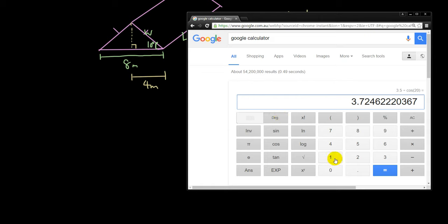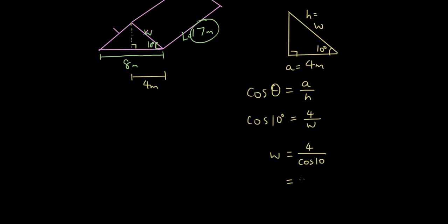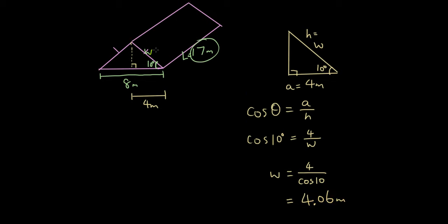Put that into the calculator. Make sure your calculator says degrees. So 4 divided by cosine 10, and the answer is 4.06, so that's 4.06 meters, which I'm going to label as w.